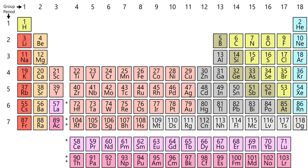Electronegativity is the tendency of an atom to attract a shared pair of electrons. An atom's electronegativity is affected by both its atomic number and the distance between the valence electrons and the nucleus. The higher its electronegativity, the more an element attracts electrons. It was first proposed by Linus Pauling in 1932. In general, electronegativity increases on passing from left to right along a period, and decreases on descending a group. Hence, fluorine is the most electronegative of the elements, while cesium is the least.